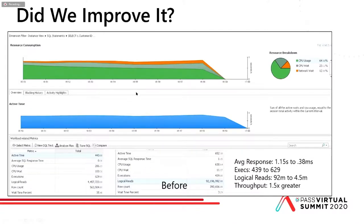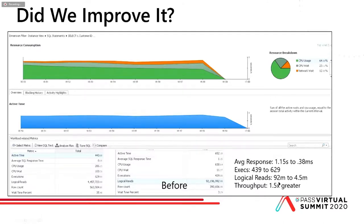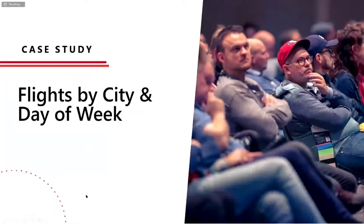Did we improve it? Yes. From the wait time analysis, instead of 97% CPU usage it went down to 64%. The query got so efficient we couldn't even run the full 10 minutes. Average response time went down to 38 milliseconds from 1.15 seconds. Throughput went up by one and a half times. Logical reads went from 92 million down to 4.5 million — far better performance.